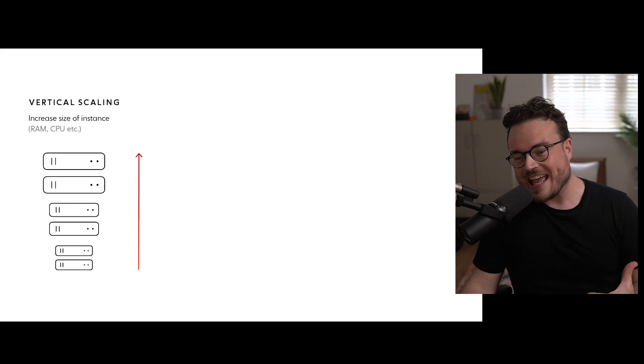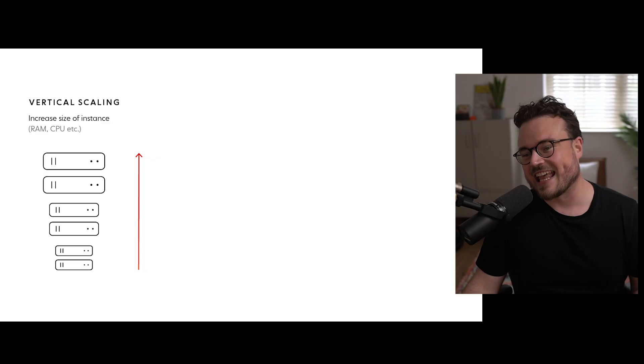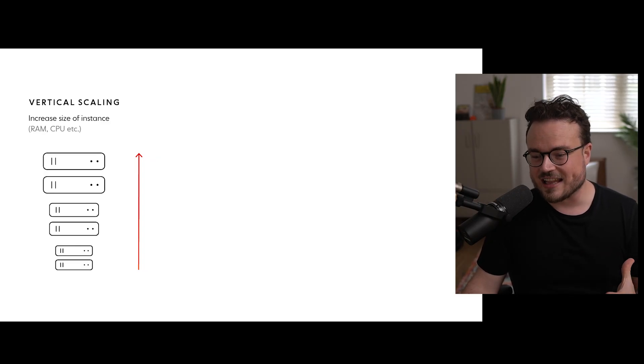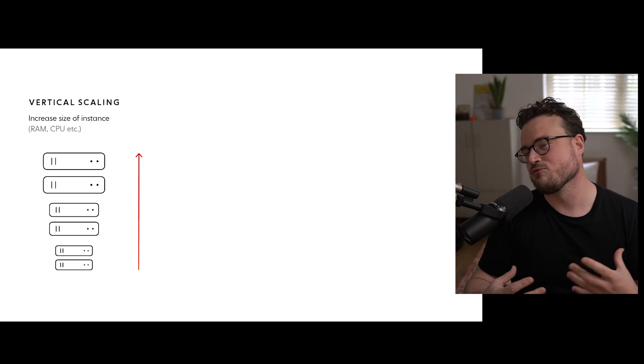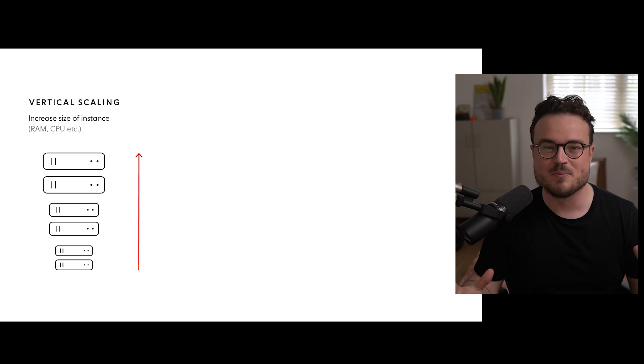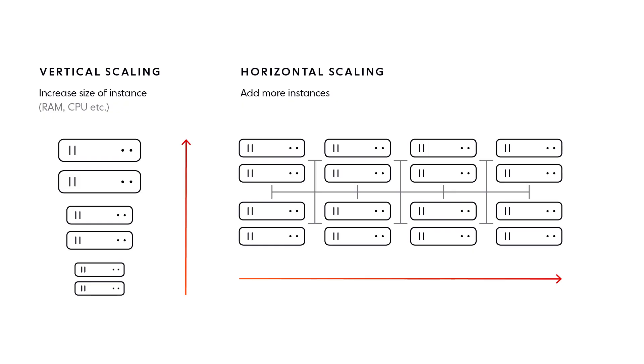With those things out of the way — which apply to any method of scaling WebSockets and are just part of WebSockets in production — let's take a closer look at your options for scaling WebSockets. Generally there are two ways to scale any backend service. There's vertical scaling, sometimes called scaling up, where you keep adding more power or resources to an existing machine: more CPU, more RAM, that kind of thing. And then there's horizontal scaling, sometimes called scaling out, where you add more servers to the network and a load balancer shares the load evenly between them.